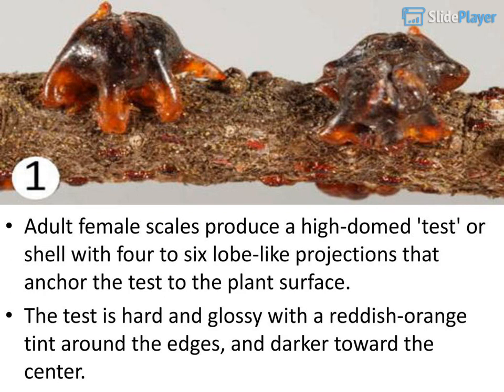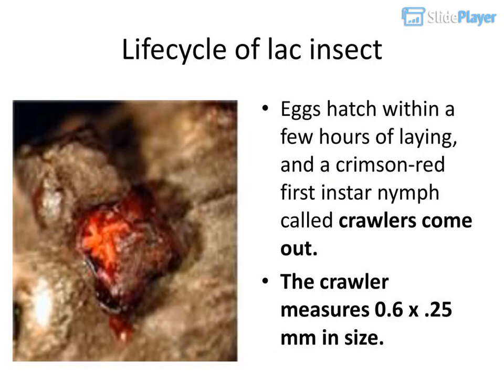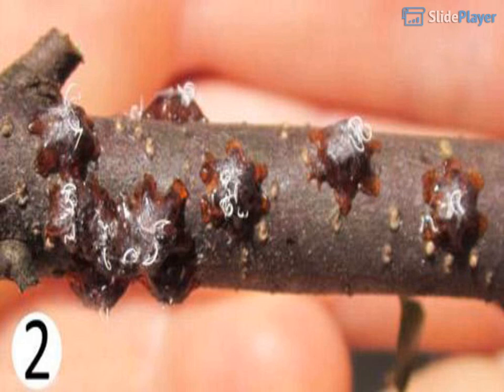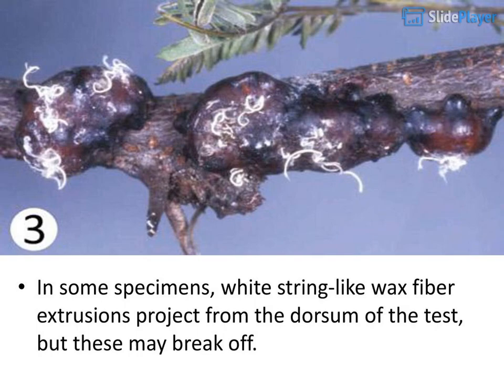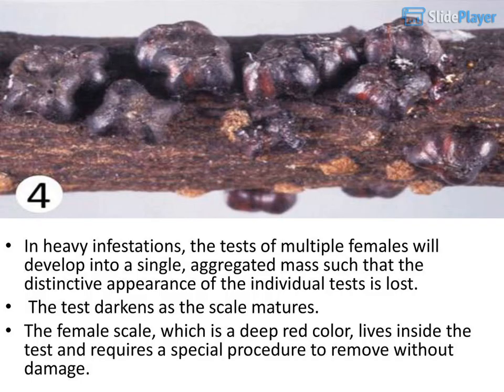Adult female scales produce a high-domed test or shell with four to six lobe-like projections that anchor the test to the plant surface. The test is hard and glossy with a reddish-orange tint around the edges and darker toward the center. Eggs hatch within a few hours of laying, and crimson-red first-instar nymphs called crawlers come out, measuring 0.6 x 0.25 mm in size. In heavy infestations, the tests of multiple females develop into a single aggregated mass such that the distinctive appearance of individual tests is lost.